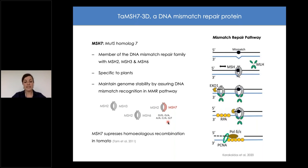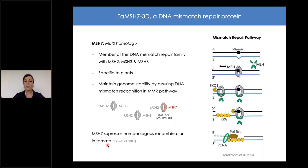MSH7 is also known to suppress homeologous recombination in tomato — shown in tomato lines with one additional homeologous chromosome from a wild relative. In the absence of MSH7, there was a modest but consistent increase of homeologous recombination of about 16%, consistent with what we observe in wheat.